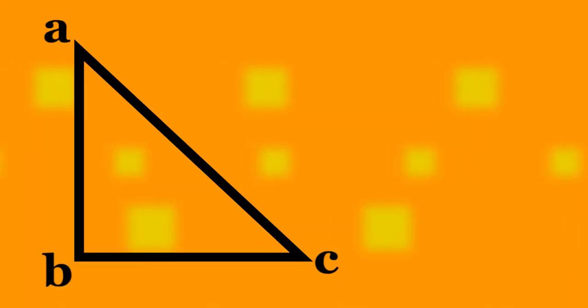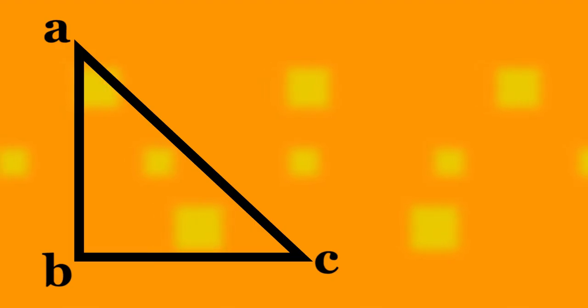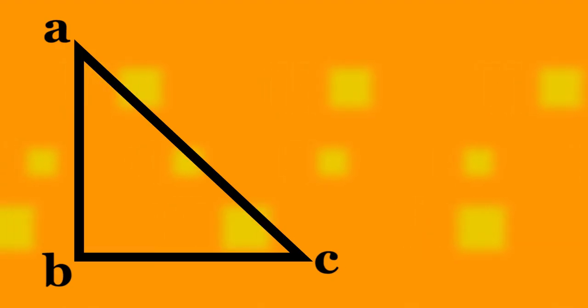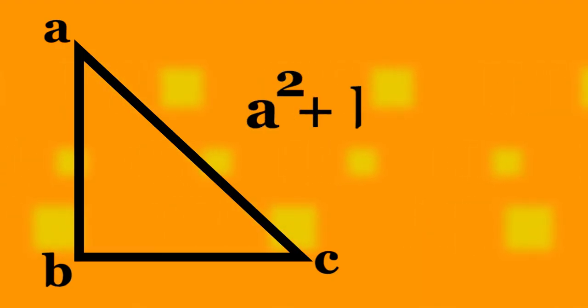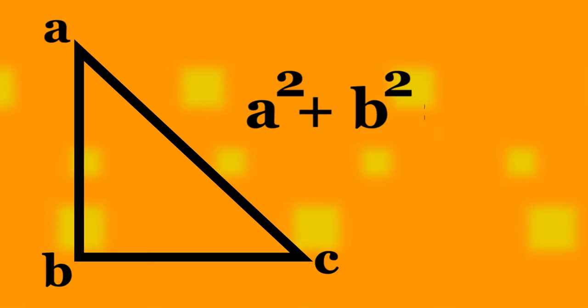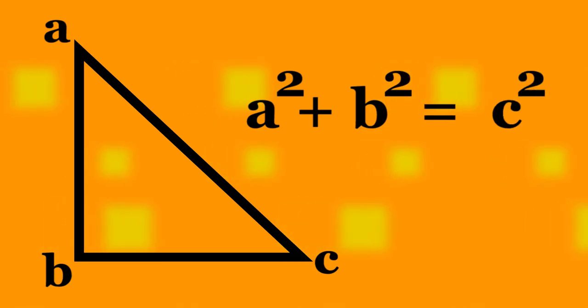The Pythagorean theorem states that the sum of the squares of the legs of a right triangle, that is A squared plus B squared, is the same as the square of its hypotenuse, that is C squared.